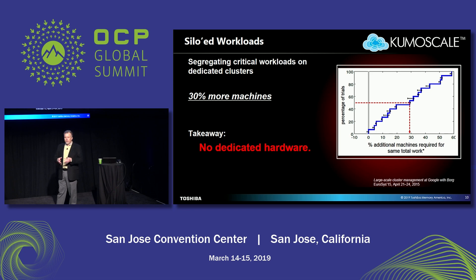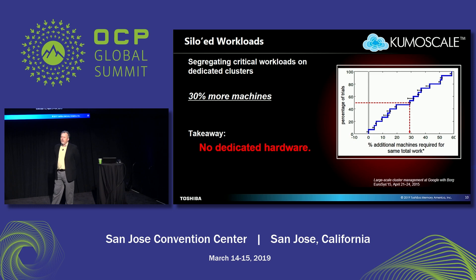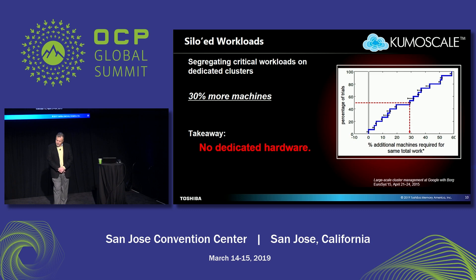They experimented with siloing workloads, which means running them the way we tend to run them today. Each application gets its own set of machines sized for its particular peak, and applications are not allowed to share machines. If a human is doing the orchestration, this is how it works — humans can't really blend enough free variables. This is a cumulative distribution graph, and what it basically says is the median case required 30% more machines for the same work. At Google scale, 30% more machines is a big number, a lot of zeros.